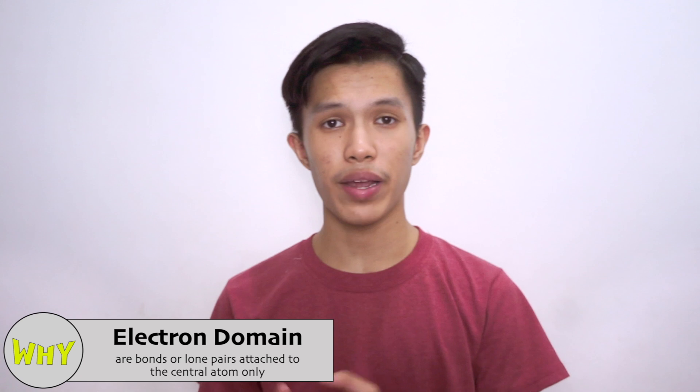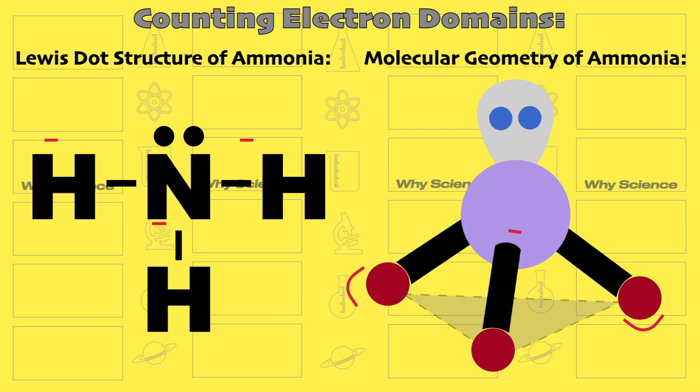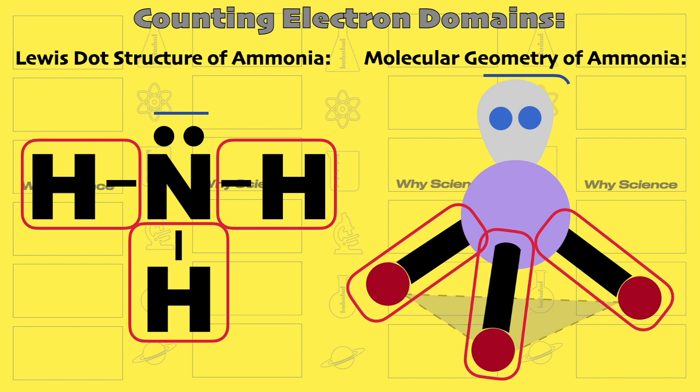What are electron domains? These are bonds or lone pairs that are connected to the central atom. For example, in ammonia, we have three bonds and one lone pair connected to the central atom, so we see that we have four electron domains.